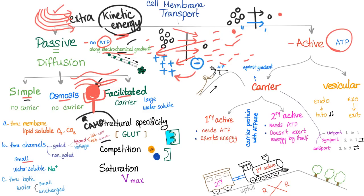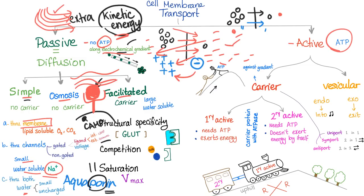To pass through channels you must be small and water-soluble, like sodium. Water is special — it's small and uncharged, so it can pass slowly through the lipid membrane itself, or quickly through water channels called aquaporins. Breaking down the word: 'aqua' means water, 'por' means pore or opening, 'in' means protein. So an aquaporin is a water protein pore.